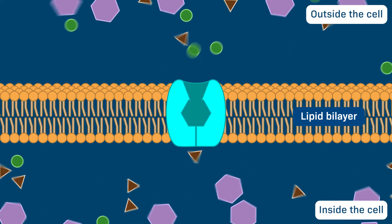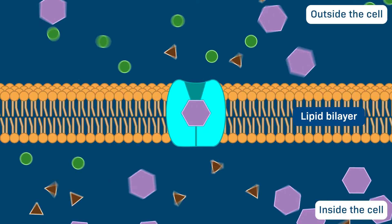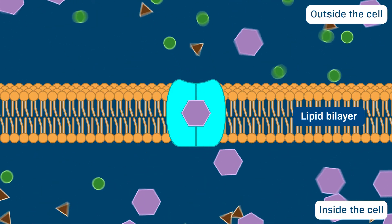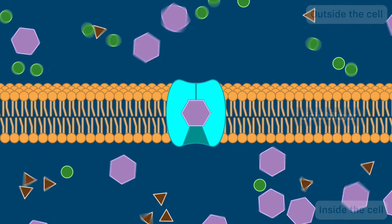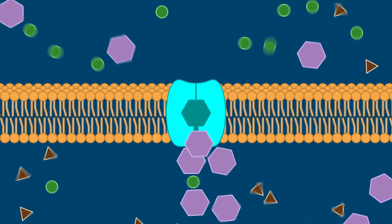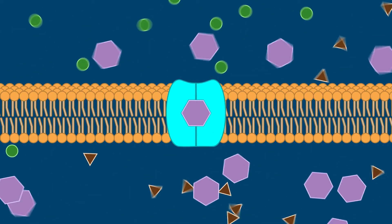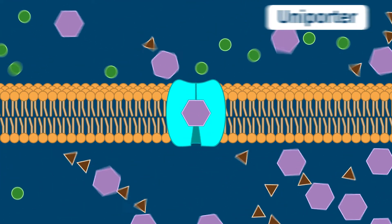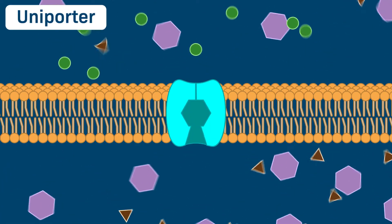Cells possess a variety of membrane proteins to carry solutes across the membrane. Carrier proteins bind to a solute and change shape as they shuttle the solute molecule from one side of the membrane to another. One type of carrier protein, called a uniporter, carries only one type of solute.